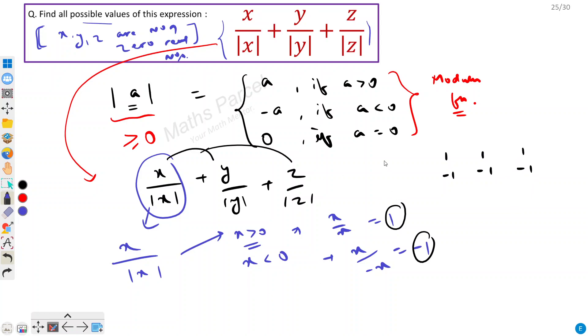Now we have to find what values can it hold. So let's say all are positive, so we will get 3. We will add all them: 1 plus 1 plus 1, so we will get 3. Let's say all are negative, then we will get minus 1 minus 1 minus 1, that would be minus 3.